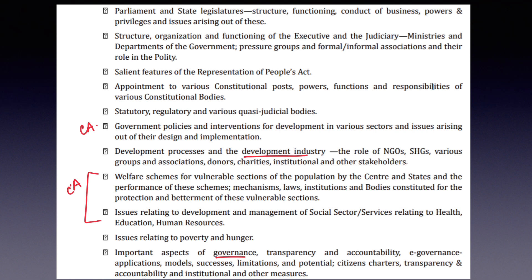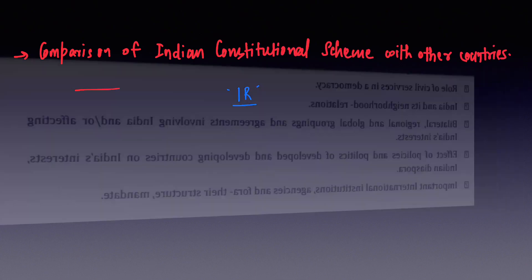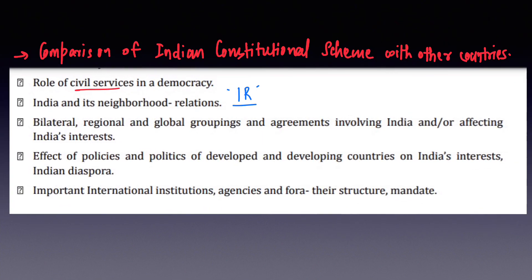In the section marked 'CA' (current affairs), topics from government policy to important aspects of governance can only be prepared from online sources — no single book covers all of this. That's where my channel will help, as I'll provide content and notes for all these topics. There's one more polity topic to prepare: a comparison of the Indian constitutional scheme with other countries. Another topic requiring online sources is the role of civil services in a democracy. The next important section is International Relations — covering India and its neighborhood relations, bilateral, regional and global groupings, effects of policies of developed and developing countries on India's interests, and important international institutions and agencies.